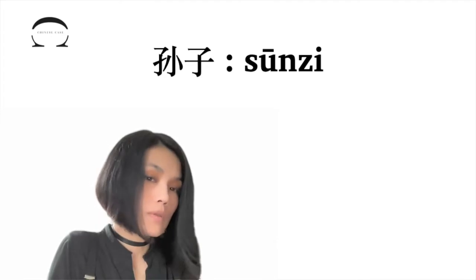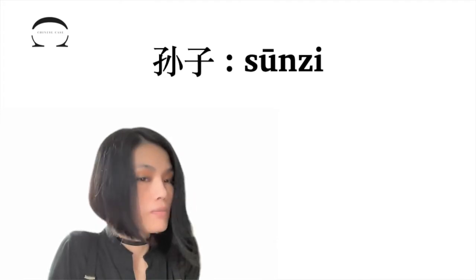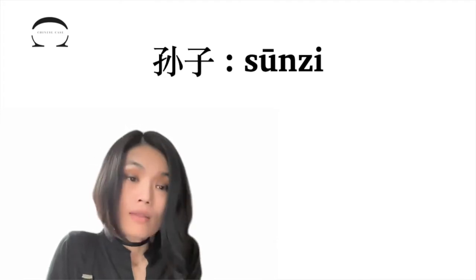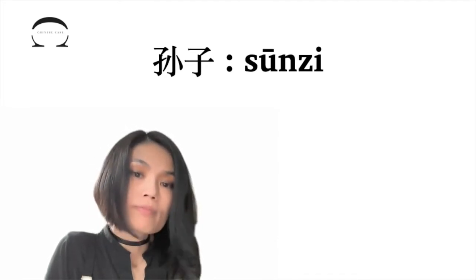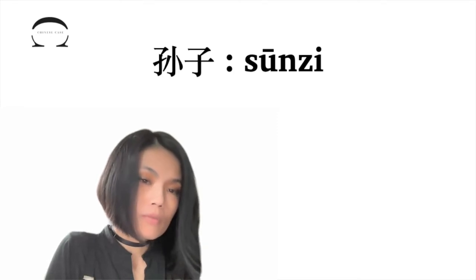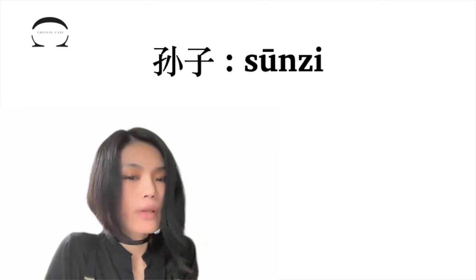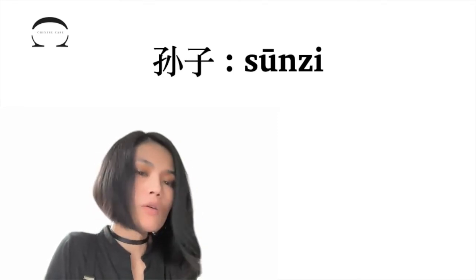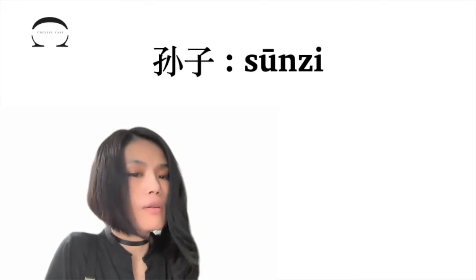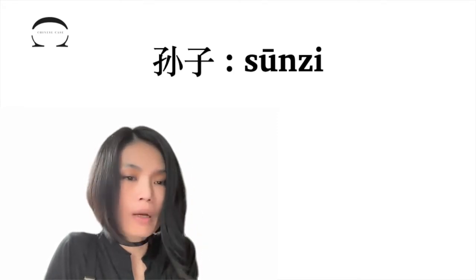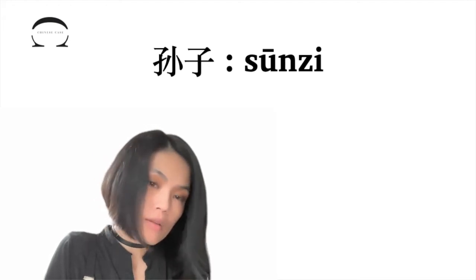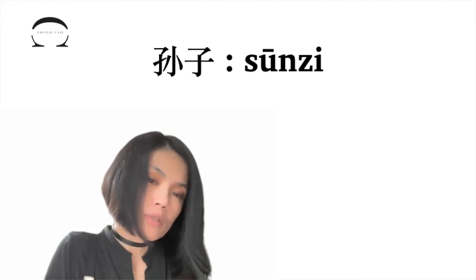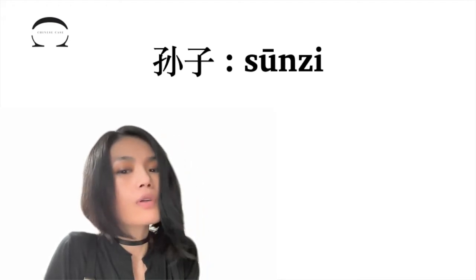The second word, 孙子 — the one with neutral sound — has two usages and meanings. One means 'grandson,' a title of a family member, nothing to worry about there. But the other usage puts it straight into the club of cursing words.